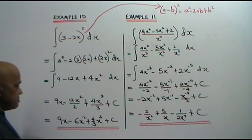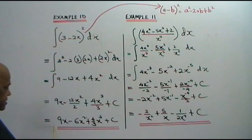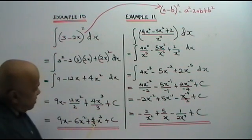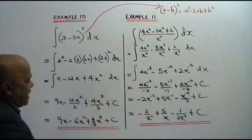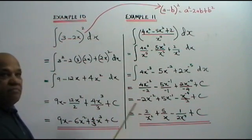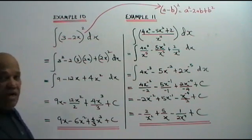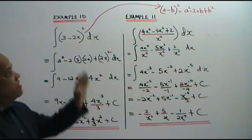So what do you get? 9x minus 6x squared — you cancel this, 12 divided by 2 gives 6. Plus 4 over 3 x cubed plus C. Very straightforward. That is your answer.